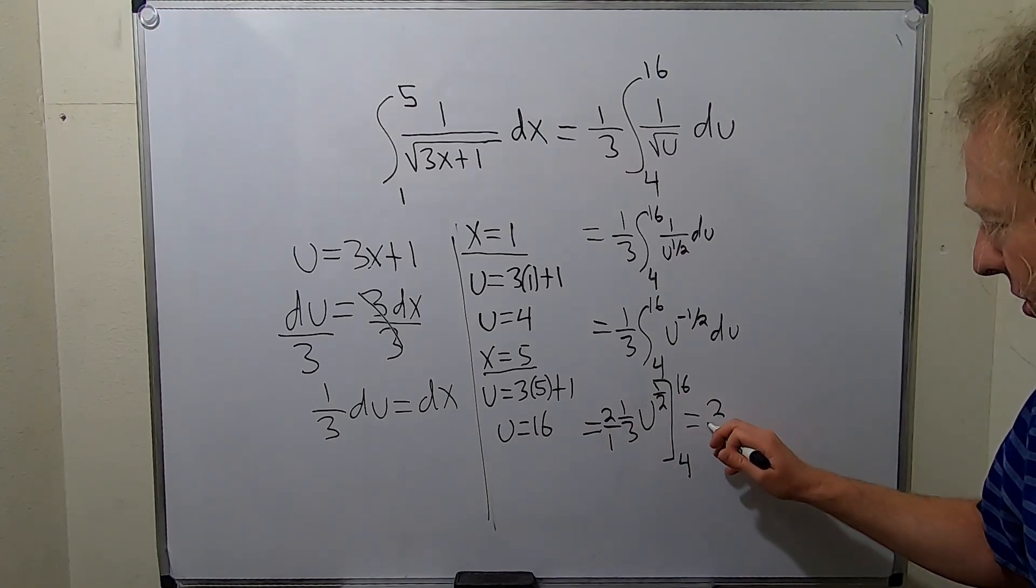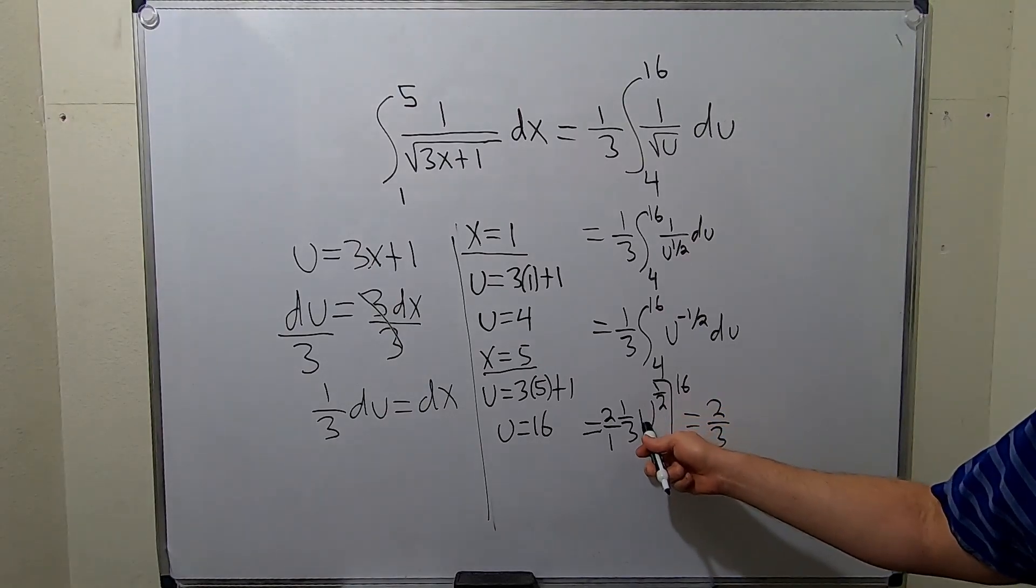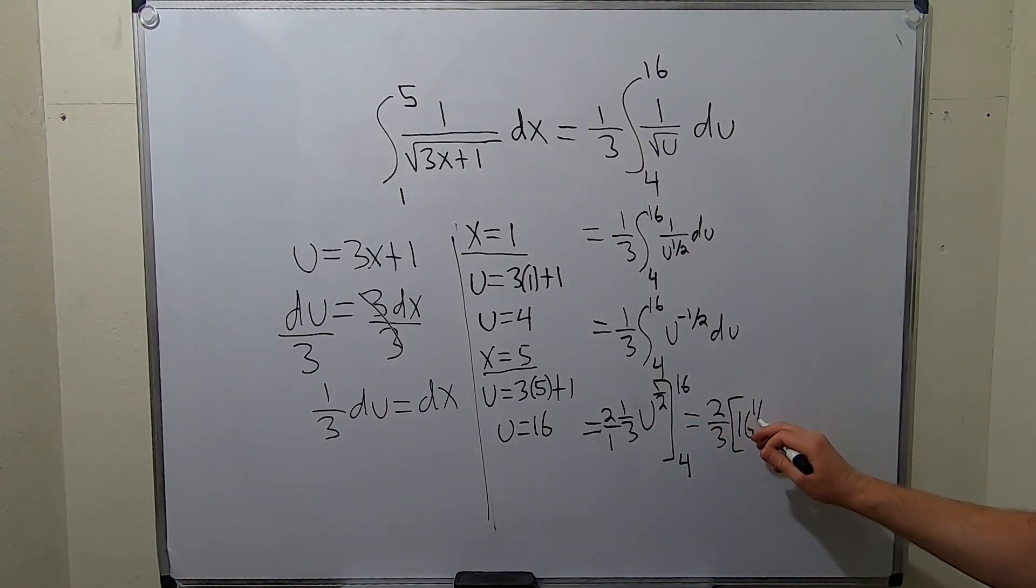All right, let's clean this up a little bit. This is 2 thirds. And I guess now we can plug in the numbers. So you plug in the 16, so you get 16 to the 1 half. You subtract. And then you plug in the 4, so you get 4 to the 1 half.